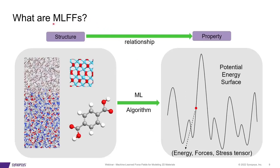In simple form, the machine-learned force field can be considered as a structure-property relationship model. The only difference here is that the property is not a single-valued object, but rather a complex 3N-dimensional potential energy surface.